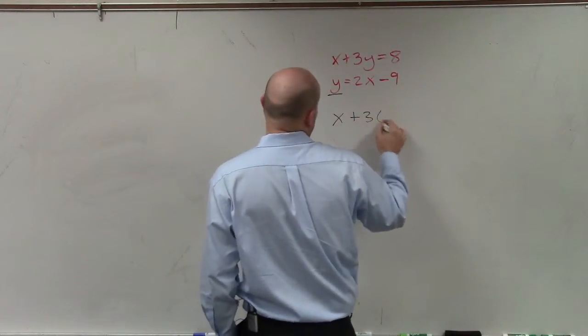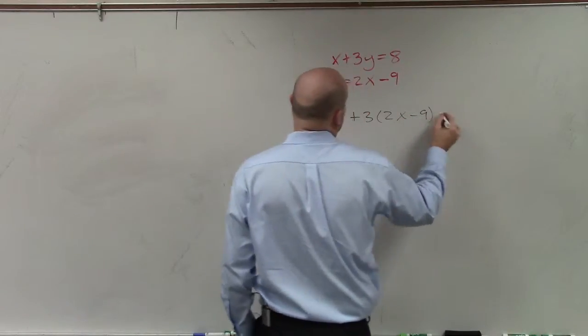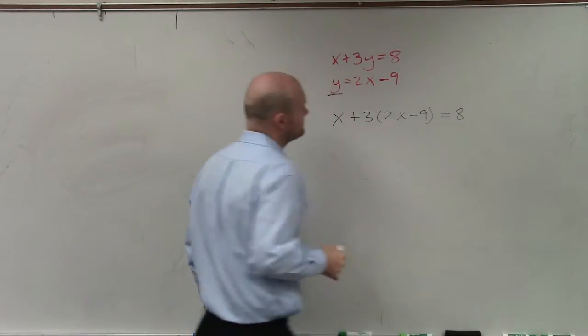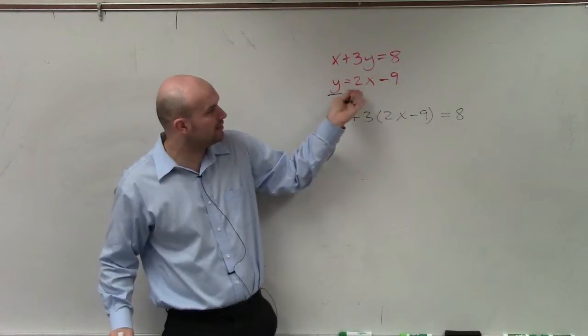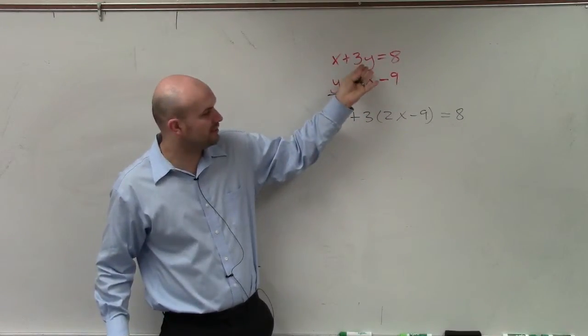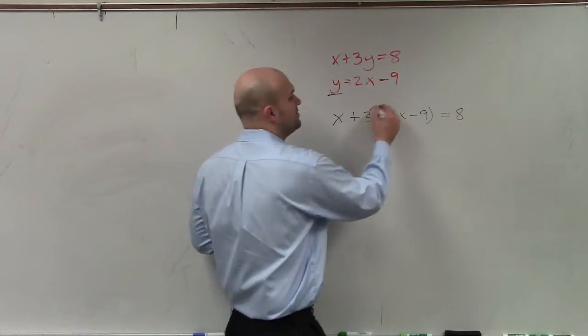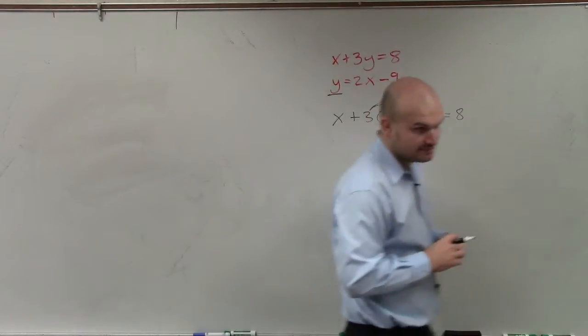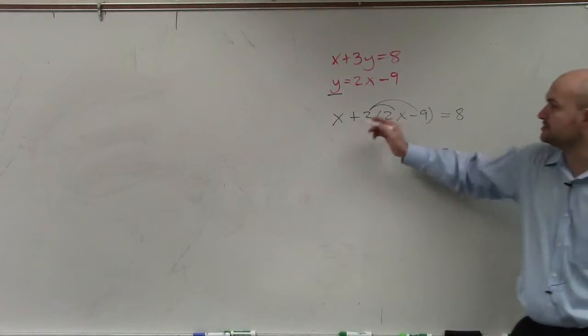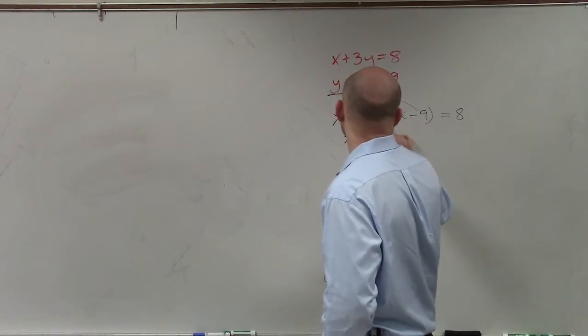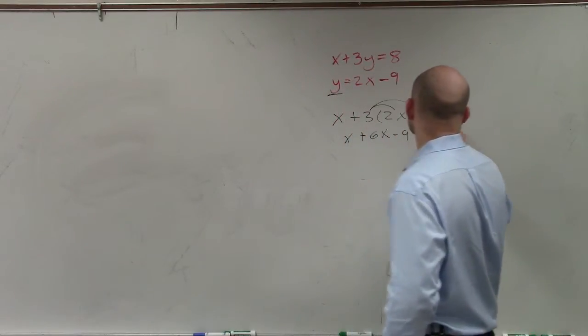So x plus 3 times 2x minus 9 equals 8. So all I basically did was took the value of y from one equation and I plugged it into the other equation. Now you do have to remember to apply your distributive property. Be careful with your math operations. And therefore, I have x plus 6x minus 9 equals 8.